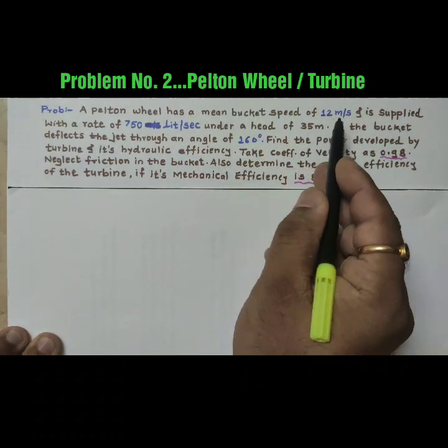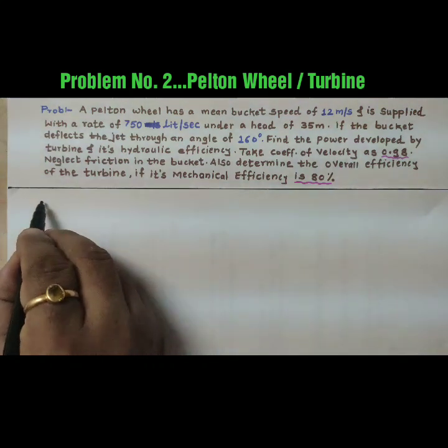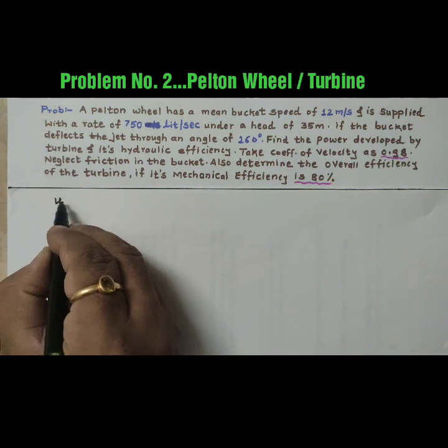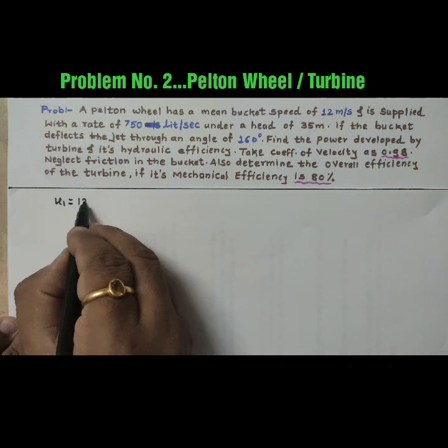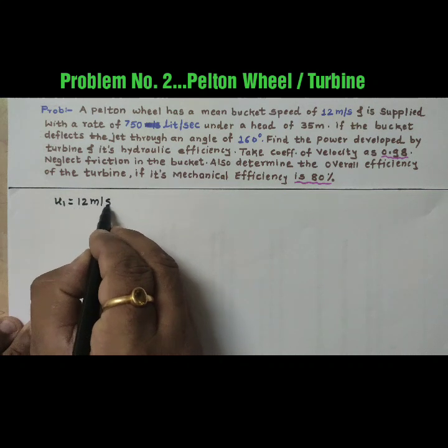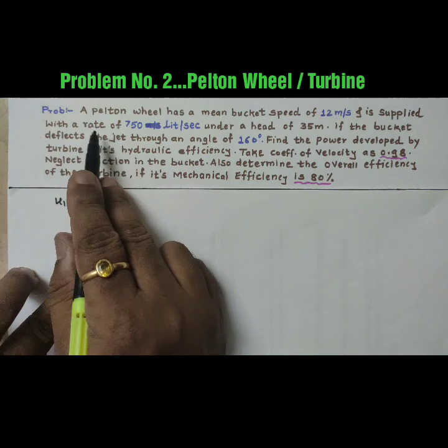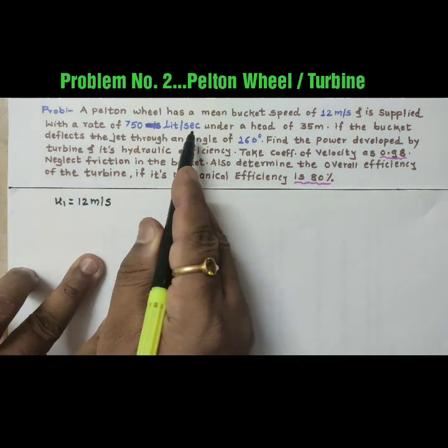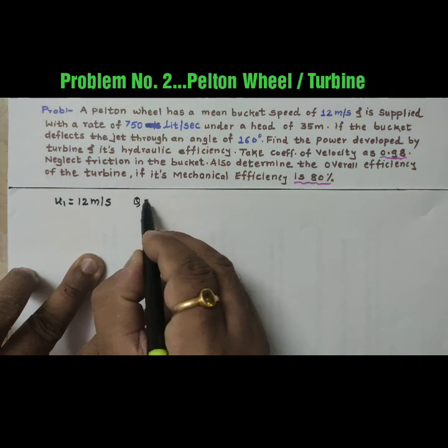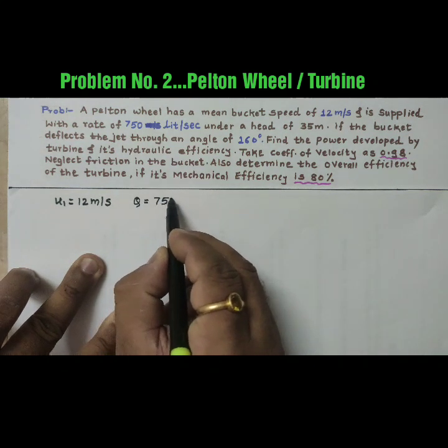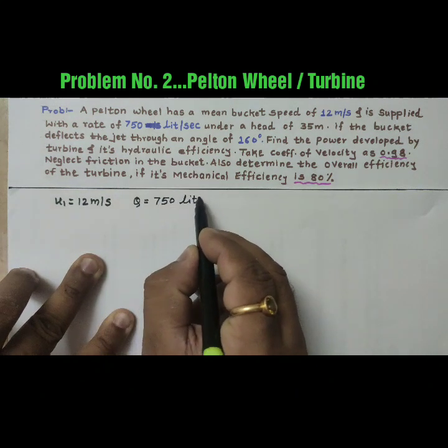Bucket speed is 12 meter per second, that is u1 equal to 12 meter per second. Then supplied with a rate of 750 liter per second, that is the flow rate Q is equal to 750 liter per second.